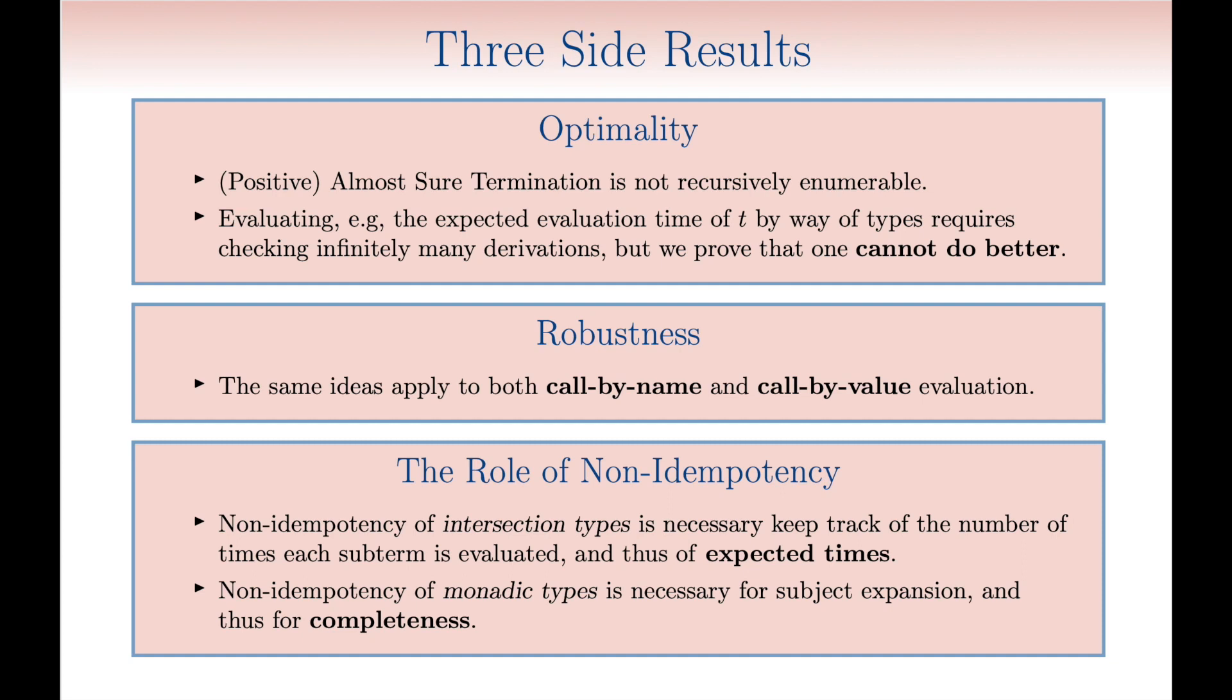After this brief outline, we now give some technical details about our work, but we do it only after having introduced the basics about randomized higher order computation and intersection types.